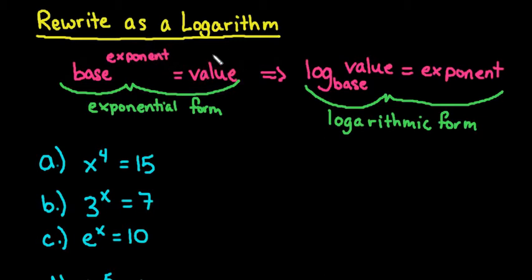And the value is the output or the answer you get. So when you write it in logarithmic form, the log and the base go together. Base is always written as a subscript, so it must be lower than the logarithm. And then the value equals your exponent.